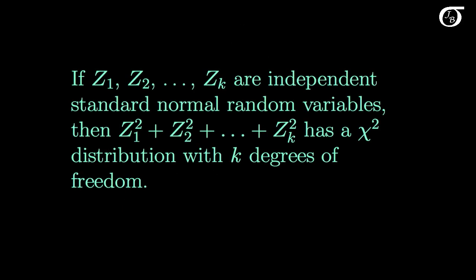Now this can actually be generalized a little bit in that if z1 through zk are independent standard normal random variables, and we square them all and add them up, then we get a chi-square distribution with k degrees of freedom. The sum of k squared independent standard normal random variables has a chi-square distribution with k degrees of freedom.